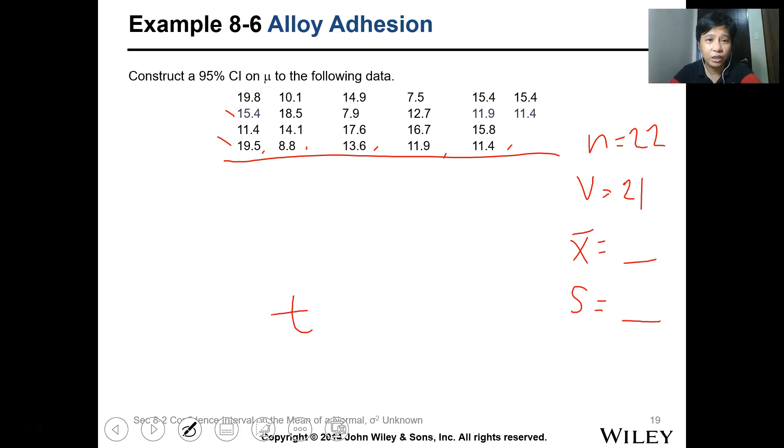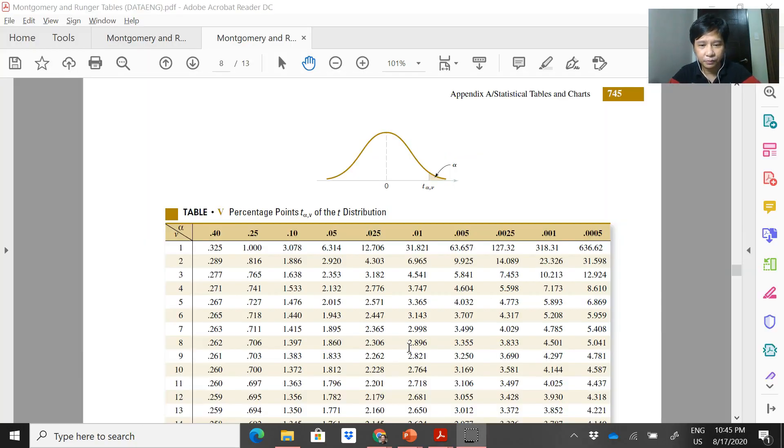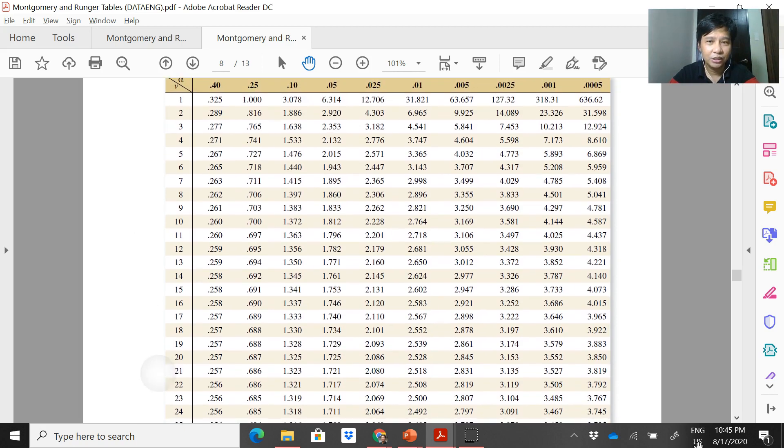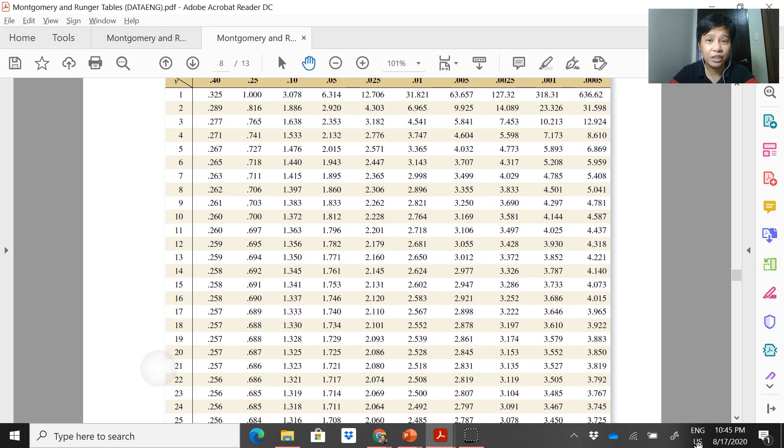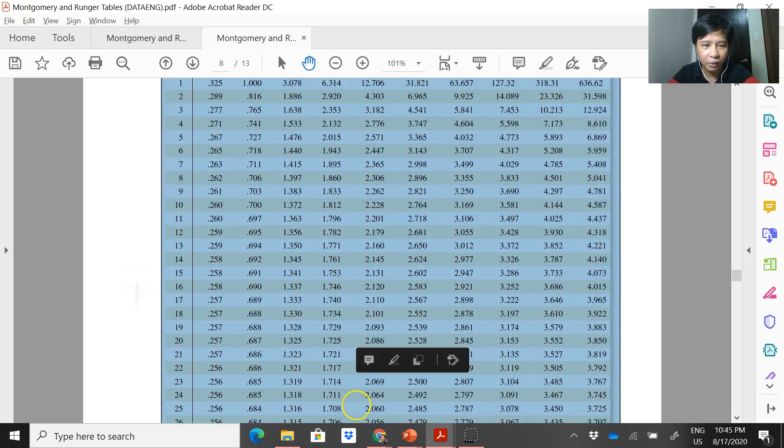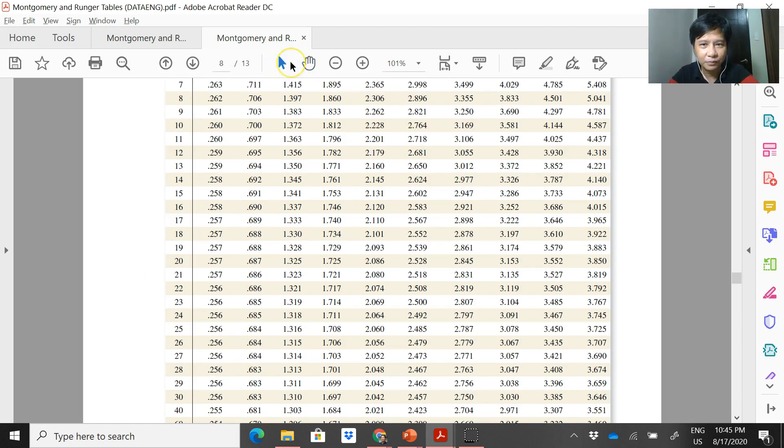When you get the t, this one, if there's no indication of upper or lower bound, the assumption is always double bound. So we need to get alpha over 2, then n minus 1 or the degrees of freedom. If we go back to the table earlier, let's go back here, find 21, this. And our alpha is 95 divided by, so it's 5 divided by 2, so 0.025. This is it, 0.025. Find the intersection of 21 and 0.025. We can highlight this, 21 and this. This is the value, 2.08.